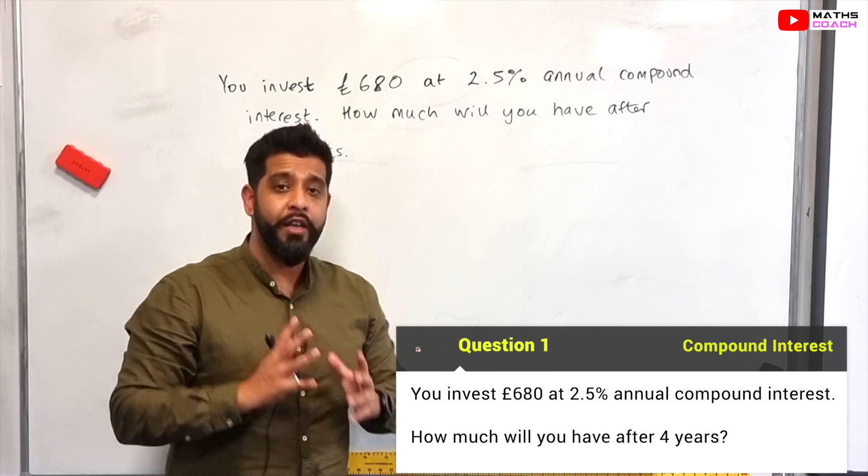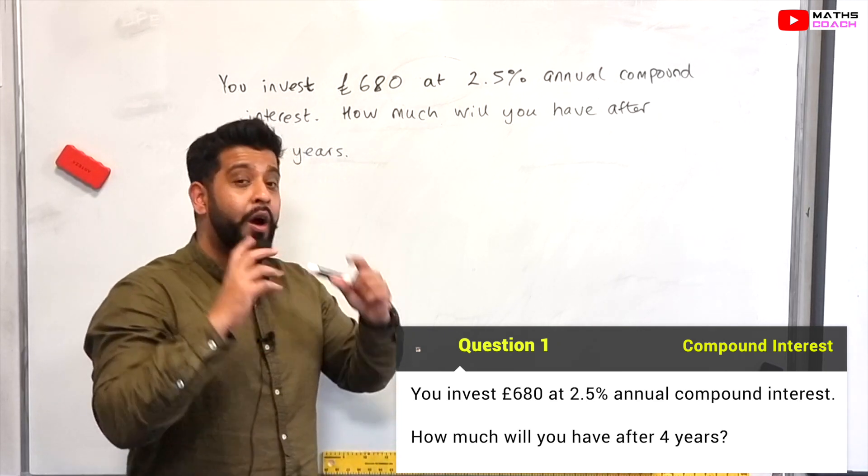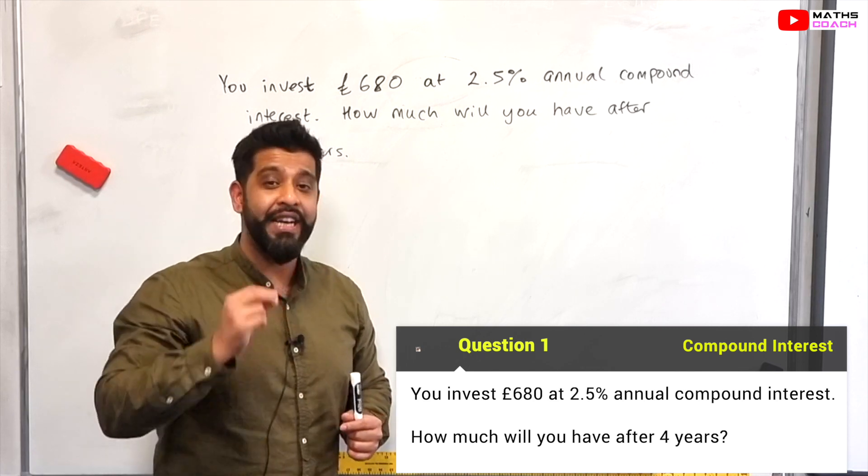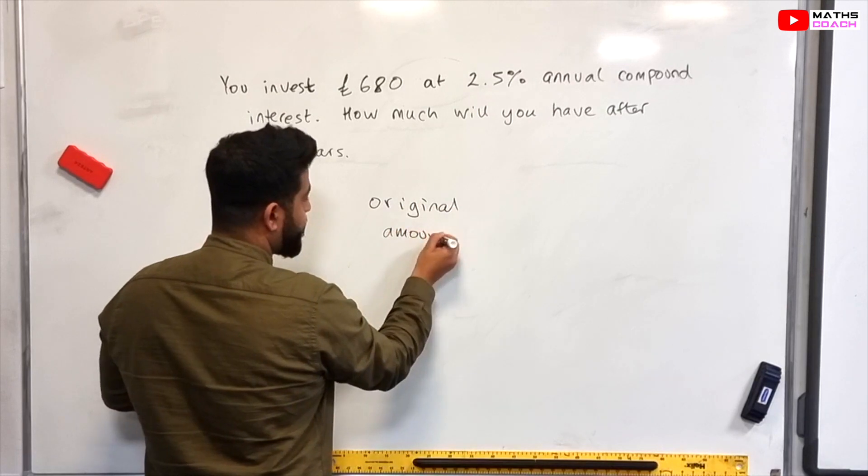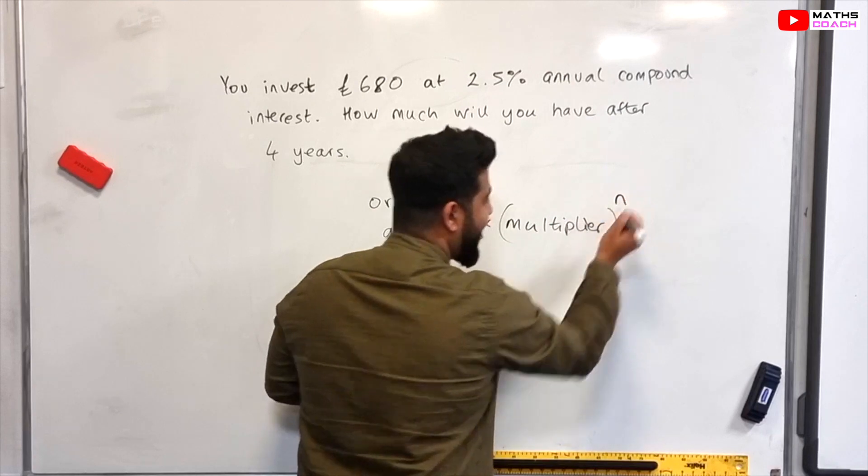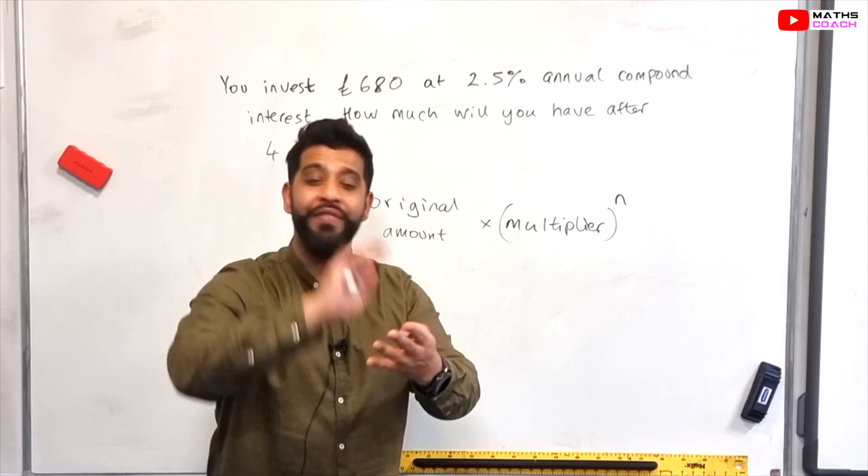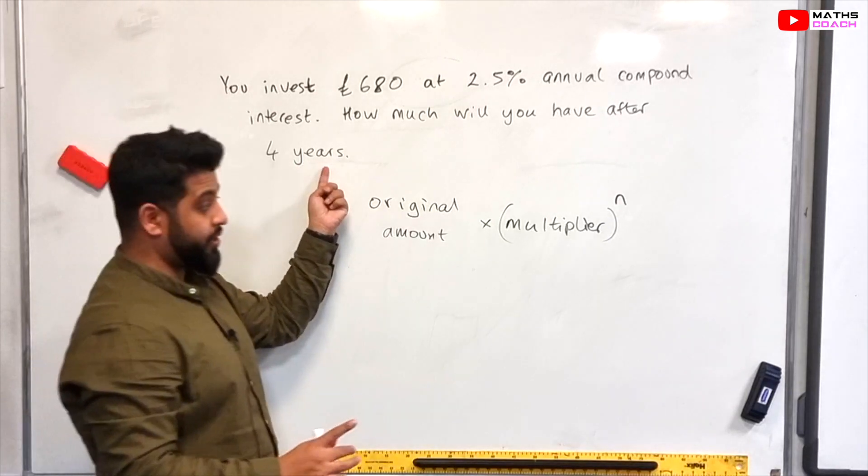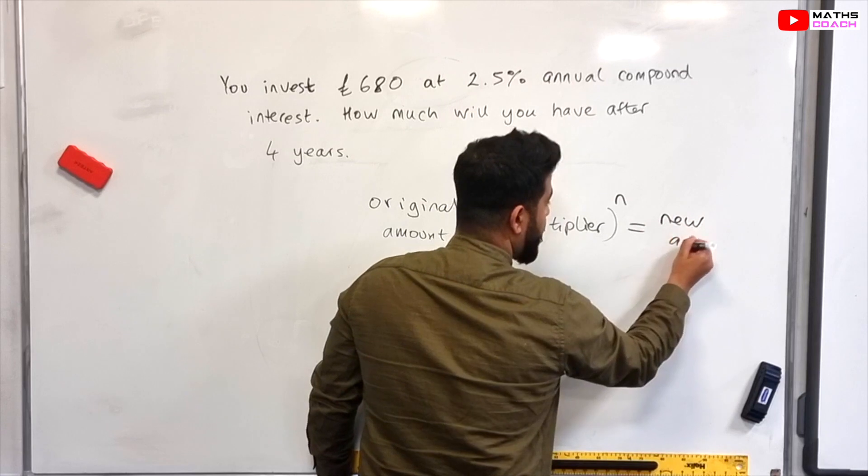Now one of the formulas I use all the time is original amount times by the multiplier equals new amount, which you've seen previously. All we are going to do is just make a slight adjustment to our multiplier by adding a power, so it looks like this: original amount times by the multiplier to the power of n. Now this value of n can be the number of days, the number of weeks, the number of months, the number of years. It doesn't matter, so in this case it's the number of years, and the rest of this equation is equal to the new amount.